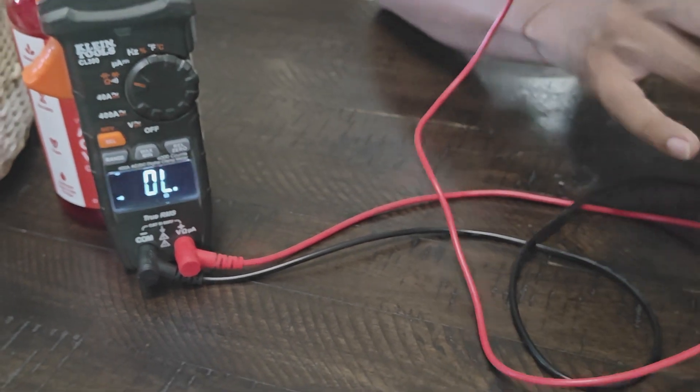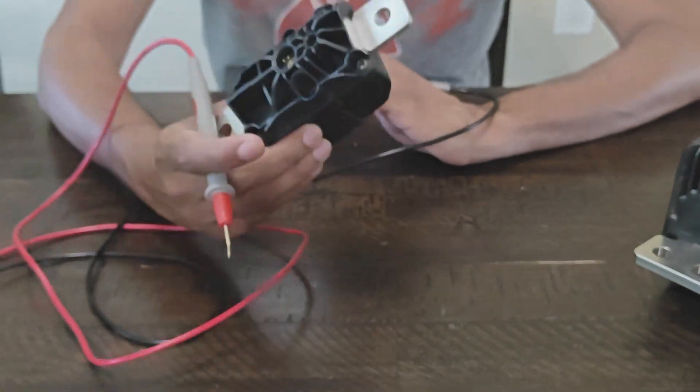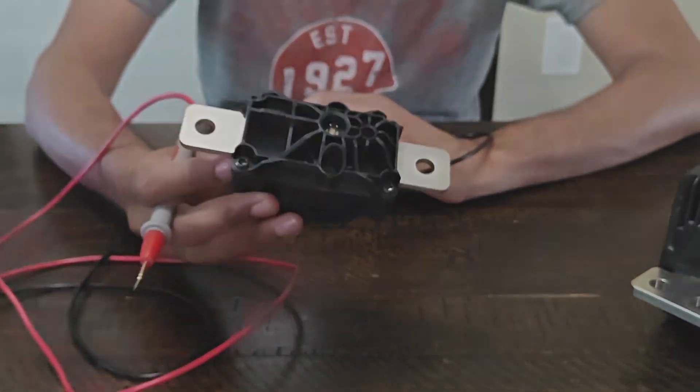You may even see 2.3 which means it's functional. It's 100% good to go and your problem is not the pyrofuse.